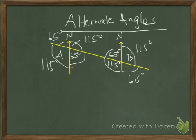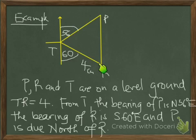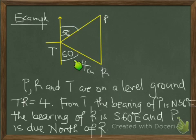For example, consider points T, P, and R on level ground. TR is 4 cm. From T, the bearing of P is North 56 degrees East, and the bearing of R from T is South 60 degrees East. P is due north of R, which means these lines are parallel.